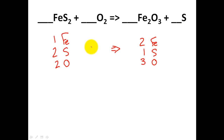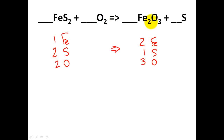Let's go ahead and balance. You can start in any order. We'll do something different. I have two irons and one iron — irons are definitely out of balance. I have three oxygens and two oxygens. Two does not go into three in a whole number ratio, but they do go into six. Three times two gives six oxygens on one side, and two times three gives six oxygens on the other. I'm going to change both oxygens to six.